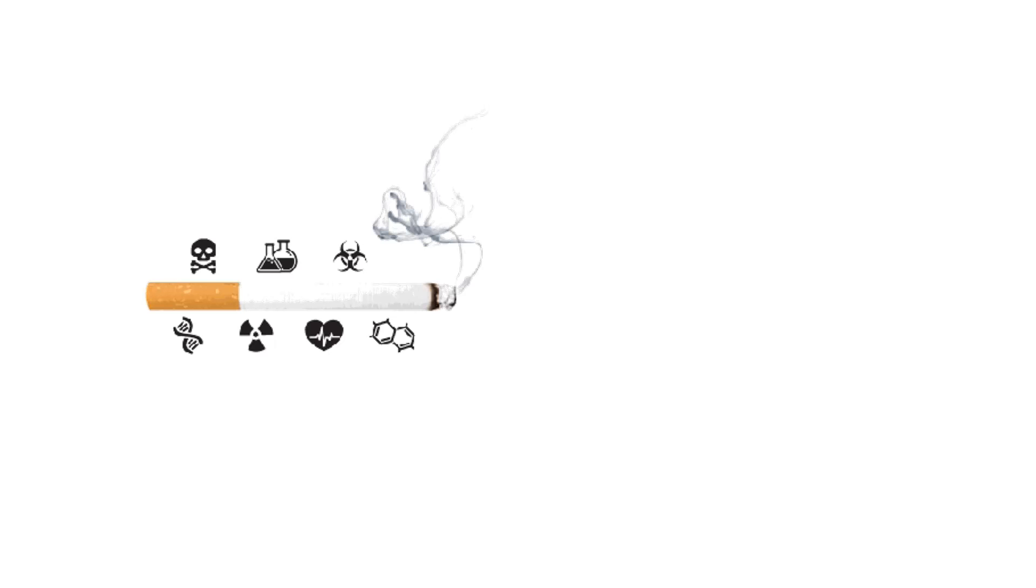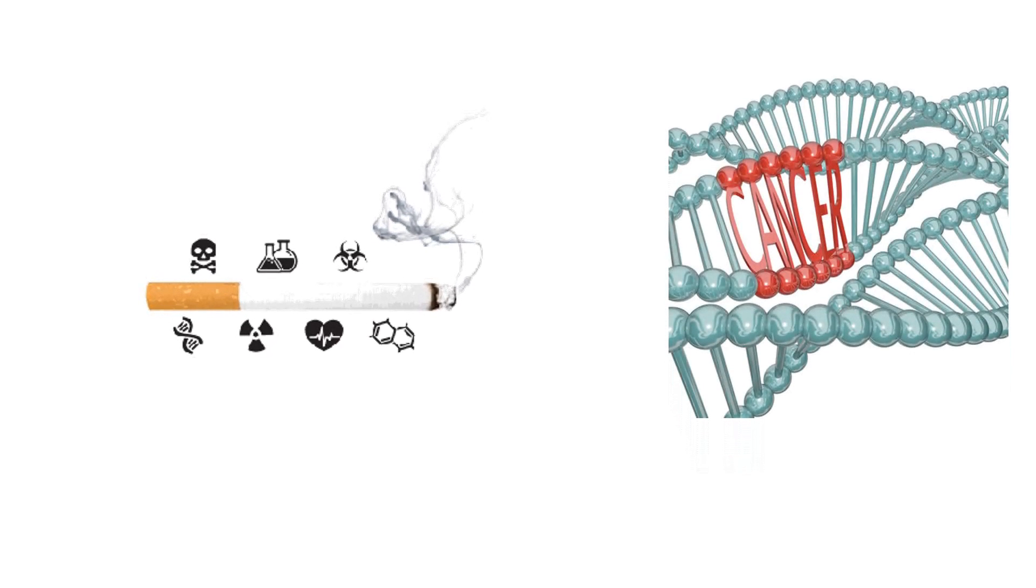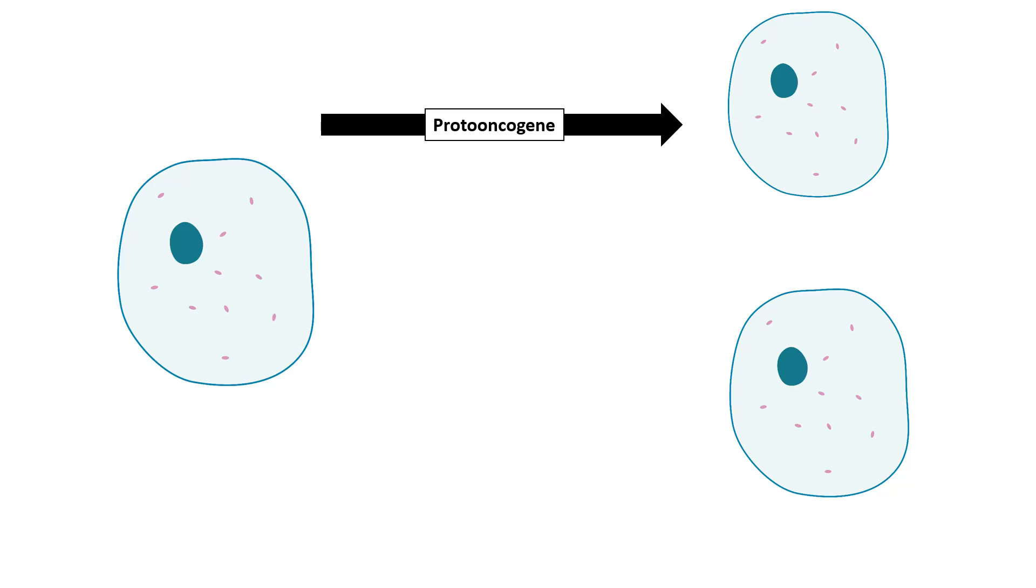Now this genetic cause of cancer is due to gene mutations. Now which genes are mutated in this context? I'll introduce the concept of proto-oncogene and oncogene. Any cell needs to grow, and in order to grow they need to divide and increase their number and also their size. So there are sets of genes known as proto-oncogenes which aid in this process.